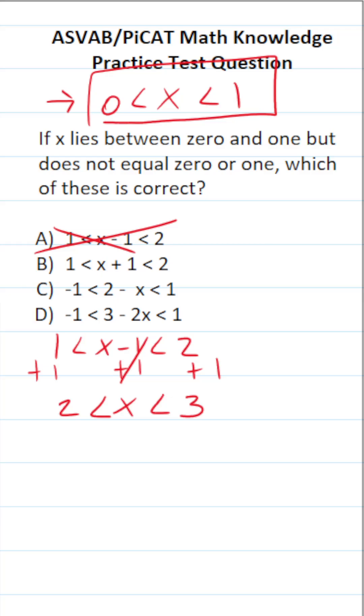I'm going to skip to C to see what we get when we solve C. This is negative 1 is less than 2 minus x, which is less than 1. We're solving for x, so the first thing I'm going to do is subtract 2 from both sides of the inequality.